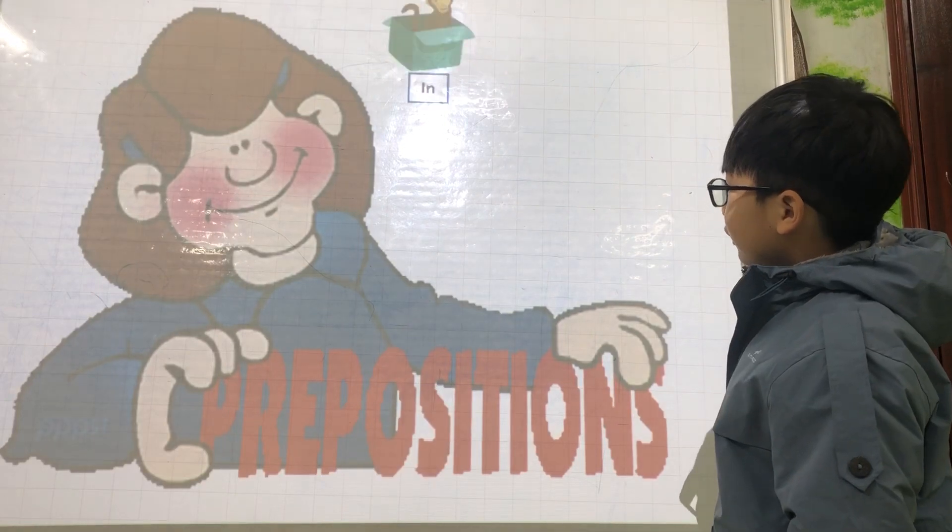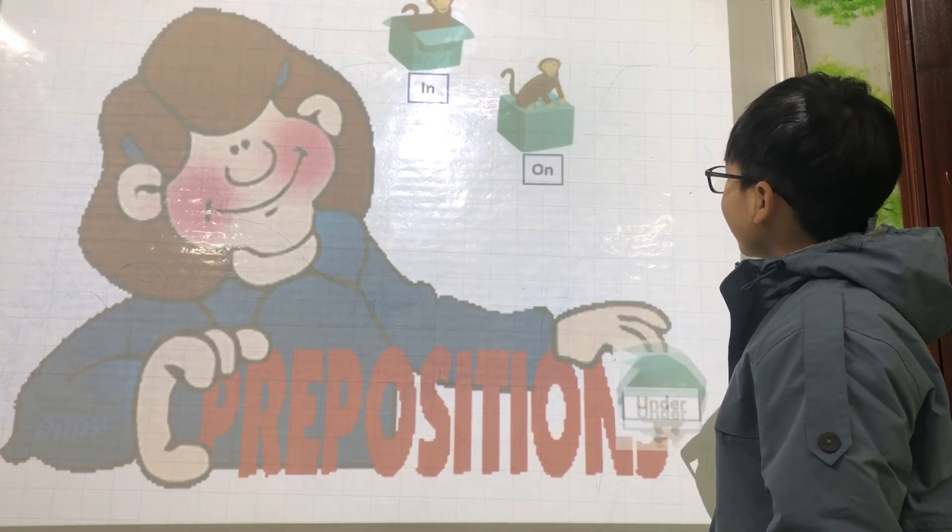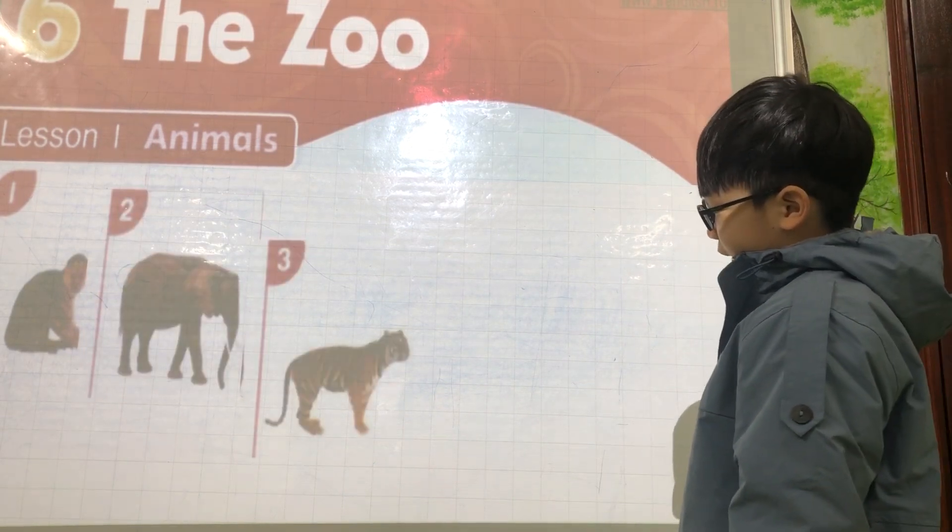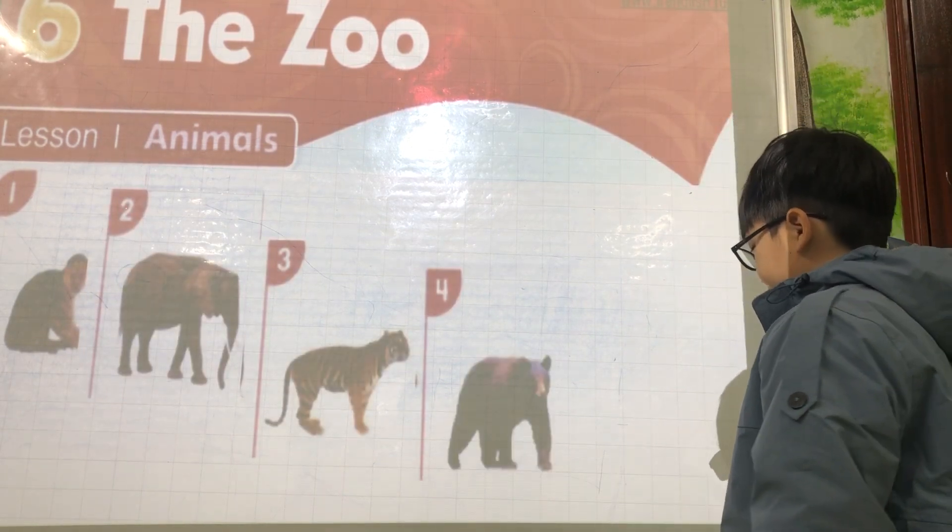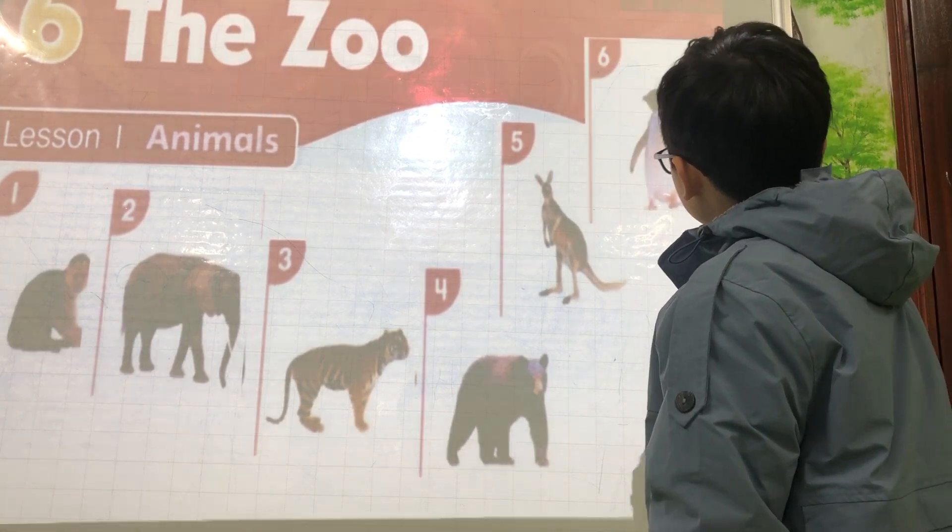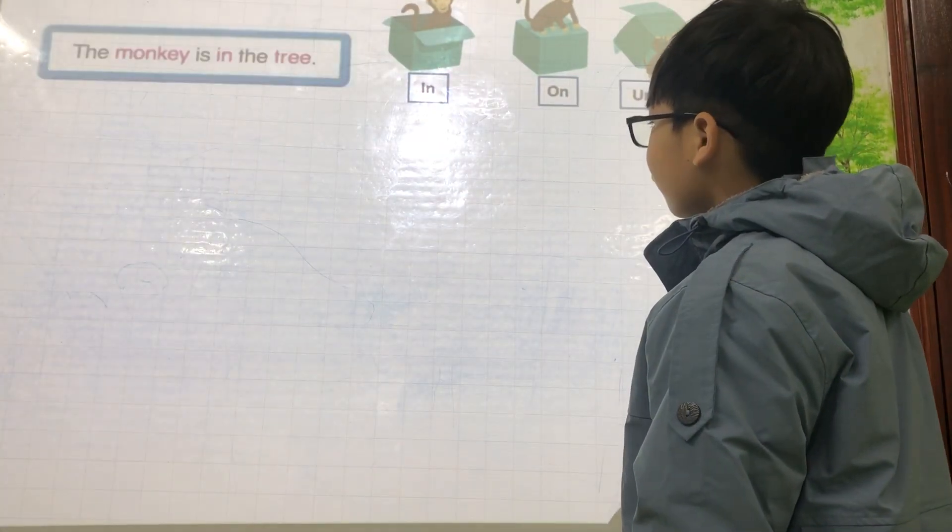Prepositions. In, on, under. Okay, animals. Monkey. Elephant. Tiger. Bear. Kangaroo. Bee. Okay, please talk about the picture.